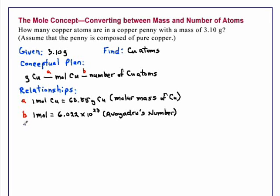We have everything we need to solve the problem. We are going to begin with 3.10 grams of copper. And using the molar mass of copper, we will convert that to moles. One mole of copper is 63.55 grams of copper. Grams of copper cancel.